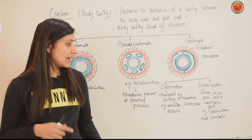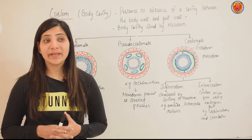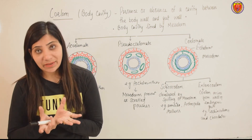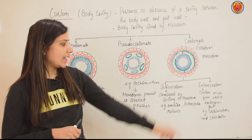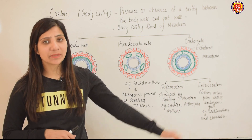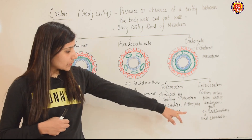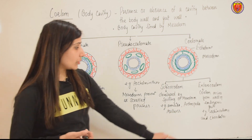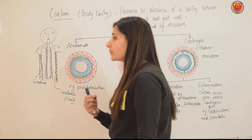Next, the enterocoelom arises from the wall of the embryonic gut. The body cavity arises from the embryonic gut wall — so it is called enterocoelom. This is not in the book, but you have to know this part, as questions have come from it. Here the examples are echinoderms and chordates. So these are enterocoelometes. You have to know your coelomates — both schizocoelom and enterocoelom types.